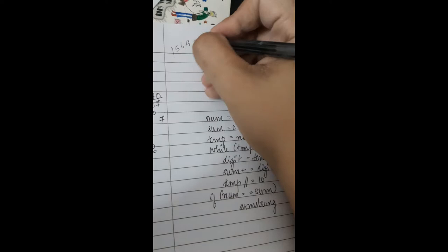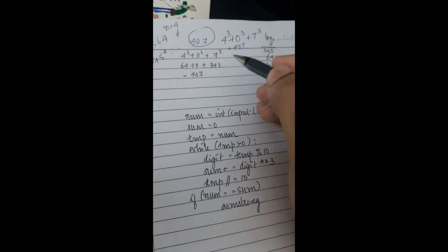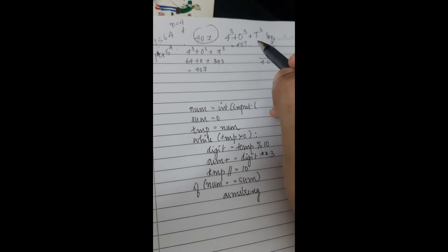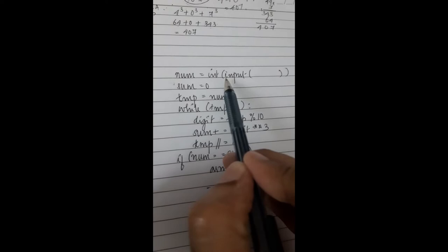Suppose you have another number like 1564. The number of digits is four, so you would do one raised to four plus five raised to four and so on — that is the case when n equals four. But in this program they have specifically mentioned that you need to find only three-digit Armstrong numbers. That is why we have four raised to three, zero raised to three, seven raised to three, as the example given.